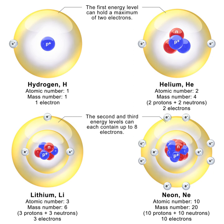Inside a nucleus, a proton can transform into a neutron via inverse beta decay, if an energetically allowed quantum state is available for the neutron. This transformation occurs by emission of a positron and an electron neutrino: p⁺ → n⁰ + e⁺ + ν_e. Transformation of a proton to a neutron inside of a nucleus is also possible through electron capture: p⁺ + e⁻ → n⁰ + ν_e. Positron capture by neutrons in nuclei that contain an excess of neutrons is also possible, but is hindered because positrons are repelled by the positive nucleus and quickly annihilate when they encounter electrons.